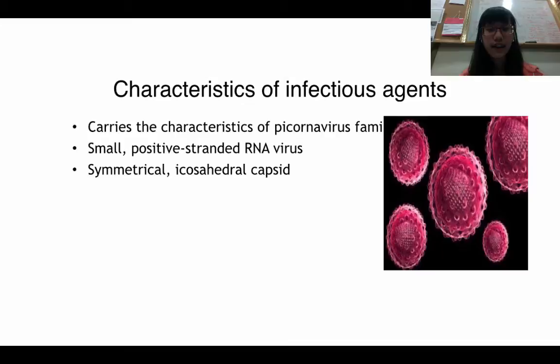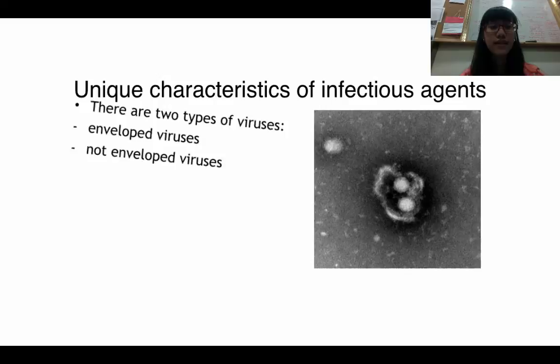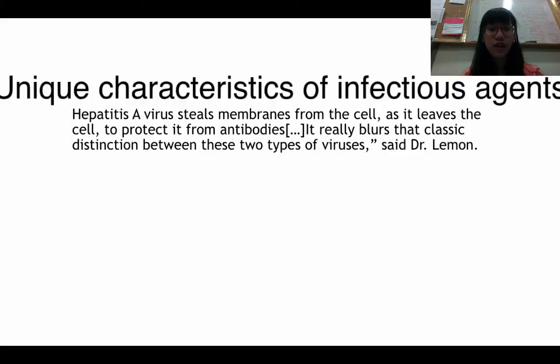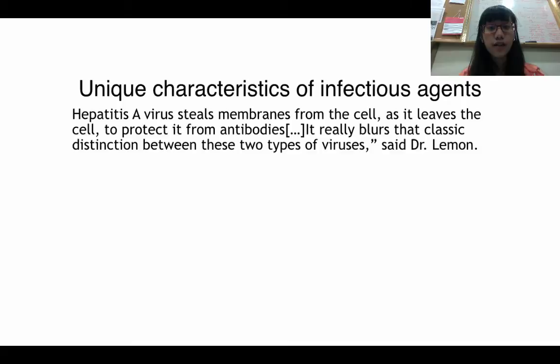It has a capsid which is symmetrical and icosahedral. What's really interesting about Hepatitis A virus is that, concerning the presence of an envelope, there are two types of viruses — enveloped and non-enveloped. Hepatitis A virus typically doesn't have an envelope, but it can hijack the cell membranes of the host cell to acquire a new envelope. This is based on research by Dr. Lehman of the University of North Carolina. As he said, Hepatitis A virus steals the membrane from the cell, which protects it from antibodies and blurs the classic distinction between these two types of viruses, thereby increasing its virulence.